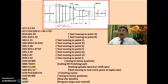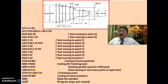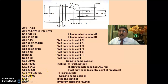M03 S1450 changes the spindle speed to 1450 RPM for better accuracy and surface finish during finishing. G00 X32 Z1 brings the finishing tool to the tool entry point. Then G70 P10 Q20 F25 — this single command executes the entire finishing pass between N10 and N20, removing the 0.1 mm allowance on both X and Z at a feed of 25 mm per minute. Finally, G28 U0 W0 returns to home, M05 stops the spindle, and M30 stops and rewinds the program.